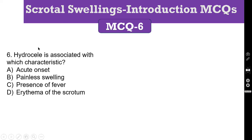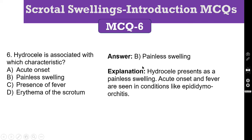MCQ number 6: Hydrocele is associated with which characteristic finding? Options: A. Acute onset, B. Painless swelling, C. Presence of fever, D. Erythema of the scrotum. The correct answer is B, Painless swelling. Hydrocele presents as a painless swelling. Acute onset and fever are seen in conditions like Epididymo-orchitis or even Torsion Testis.